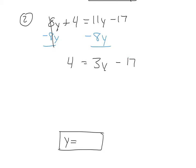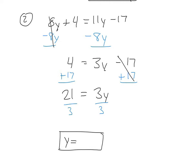How do I get rid of the minus 17? I add 17 to both sides. Going from left to right: 4 plus 17 is 21, and that equals 3y. Then minus 17 plus 17 cancels. Lastly, divide by 3 on both sides — those cancel, and you're left with y equals 7.